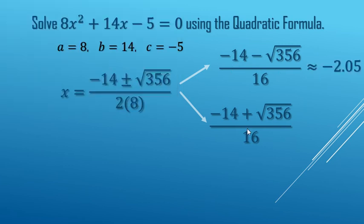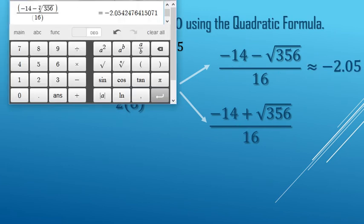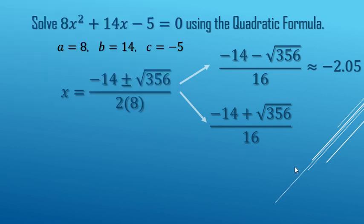And now for the plus one, we're just going to go up and switch the minus with a plus, and now we got 0.3 rounded off. So there's our two solutions: x is either negative 2.05 or it's 0.3.